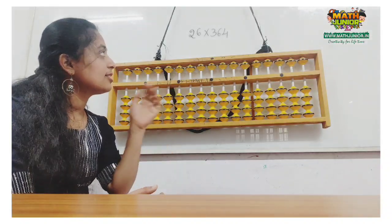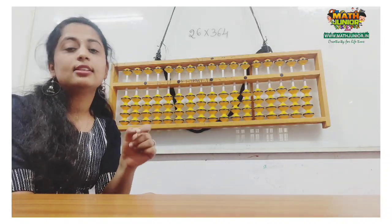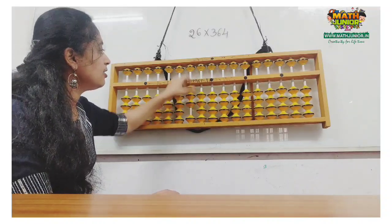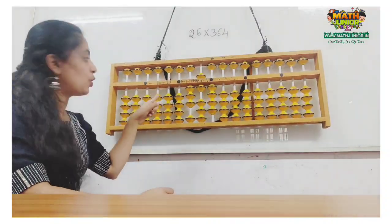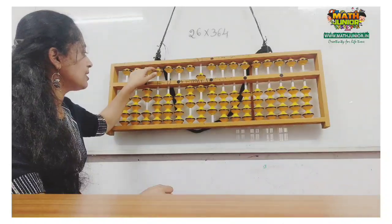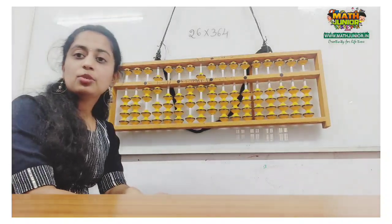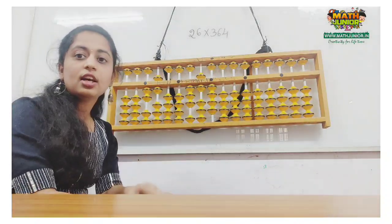First we are going to place 364 using units, tens, and hundreds. 364, and skip two rows and place 26. For multiplication problems, we have to start with the unit rod.